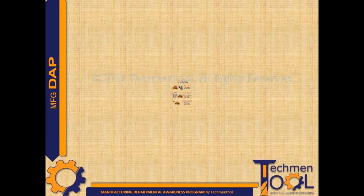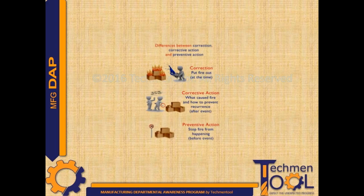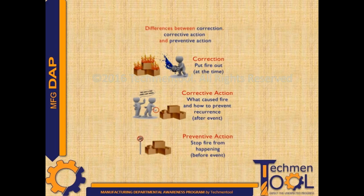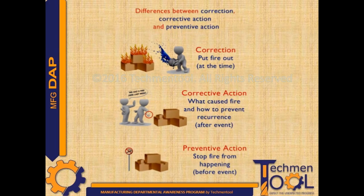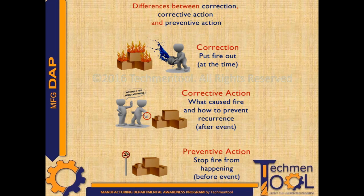What is the difference between correction, corrective action, and preventive action? Correction is nothing but giving a temporary solution to the problem. Corrective action is the process of identifying the root cause of the problem after the problem arises and giving a permanent solution to it. It is about correcting activity.